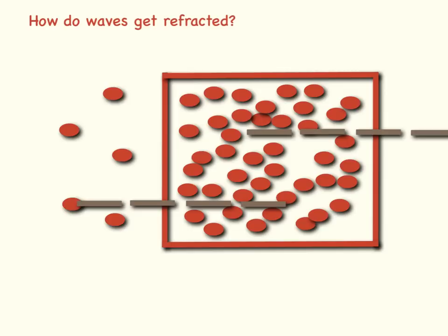So waves get refracted when they go from a medium of one density to a medium of another density and what happens is they actually change speed.